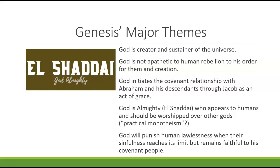God is almighty — El Shaddai, the Hebrew expression — who appears to humans and should be worshipped over other gods. The authors of our textbook call this a kind of practical monotheism: the idea that there may be other divine beings out there doing things, but the one who should be worshipped is only El Shaddai, the almighty who created the universe and works in the world through the descendants of Jacob. You acknowledge the existence of other gods but worship only one, not sacrificing or appeasing the others.